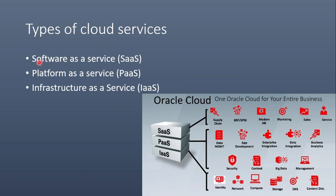When you consider Software as a Service, it means that your cloud provider is giving you a readily made software. Here you can see SaaS includes supply chain, EPM, ERP, modern HR, marketing, sales, and service. All these softwares are given to you by the cloud provider.